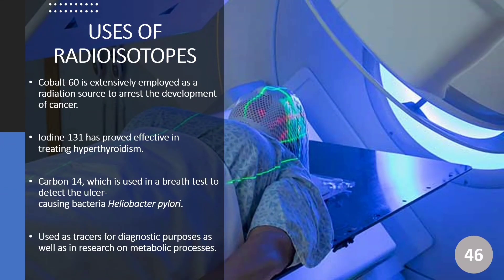Radioisotopes are used in a wide variety of fields. In medicine, radioactive isotopes have numerous applications in diagnosing and treating illnesses. One example is using radioactive iodine-131 to test for thyroid activity. The thyroid gland has a significant concentration of iodine; a measured dose of iodine-131 is administered to a patient, and the next day a scanner measures the radioactivity in the thyroid gland. The amount of radioactive iodine that collects there is directly related to thyroid activity, allowing physicians to diagnose both hyperthyroidism and hypothyroidism.